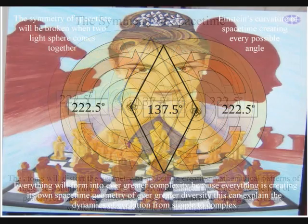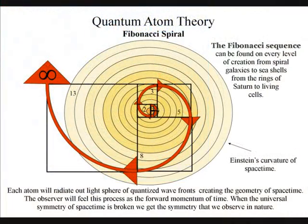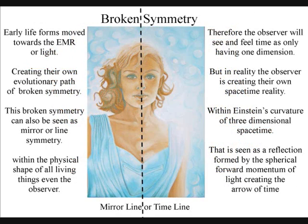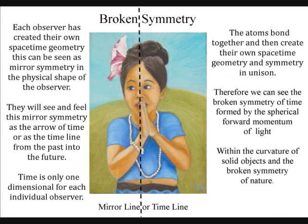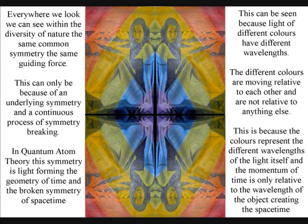Everything is governed by the geometry and symmetry of space-time, from seashells to spiral galaxies, to the evolution of life itself. Even the observer has created their own space-time geometry. This can be seen as mirror or line symmetry in the physical shape of the observer. We will see and feel this line symmetry as the arrow of time or as the timeline pointing from the past into the future. Therefore, the observer will feel time as only having one dimension, but in reality the observer is creating their own symmetry and geometry in three-dimensional space-time.